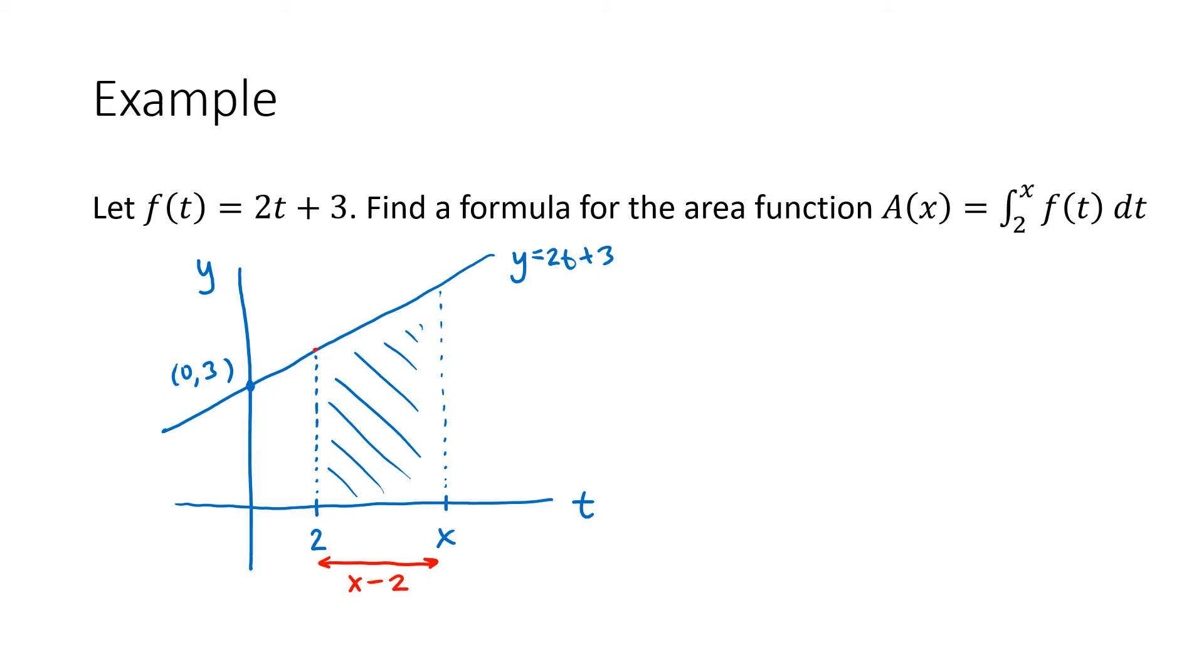So this point up here, that's the point on my line when I plug in t equals 2. So that's going to be the point 2 comma 7. That's what I get when I plug 2 into that formula. And then this is going to be the point x comma 2x plus 3 because that's what I get when I plug x in for t.